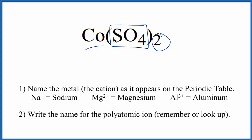We have two of these sulfate ions. They're a group of non-metals. So to write the name for Co(SO4)2, we'll use these rules here.